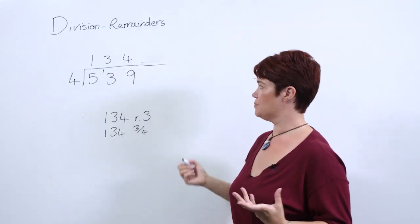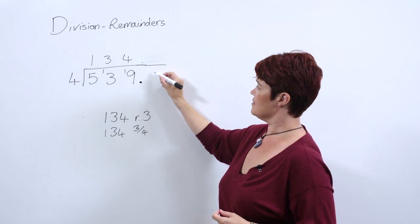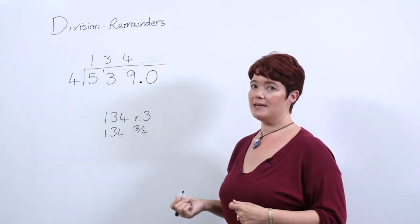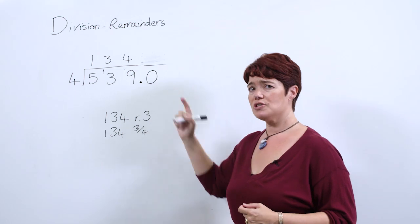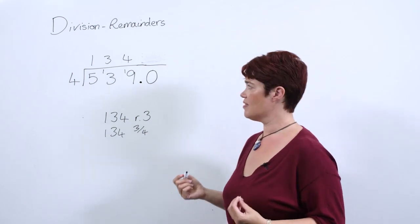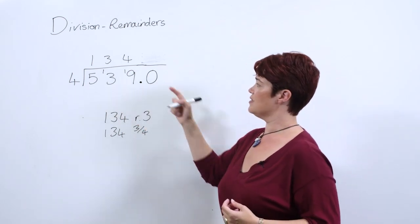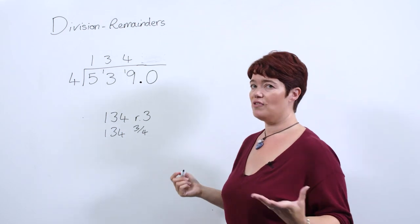Hopefully their place value is secure at this point and that by putting a decimal point and a 0 placeholder, that has not changed the value of that number and they understand that. So 539.0 is still the same as 539.